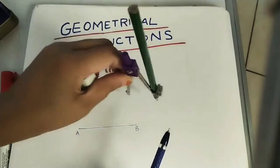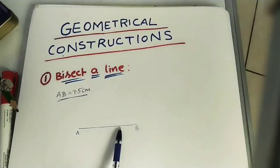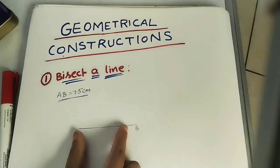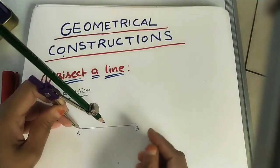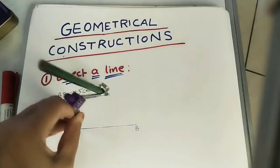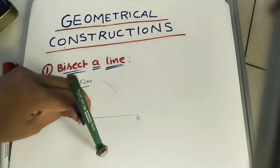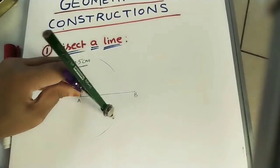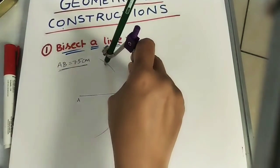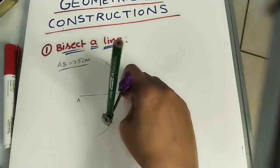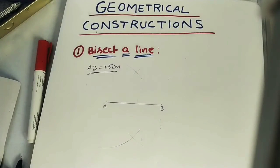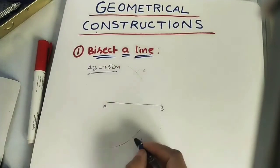To divide the line, take the compass — both ends should be on the same plane. Take a radius more than half the line length. With A as center, draw arcs on both sides of the line. Similarly, take the same radius with B as center and cut the previous arcs. Mark the intersection points as C and D.